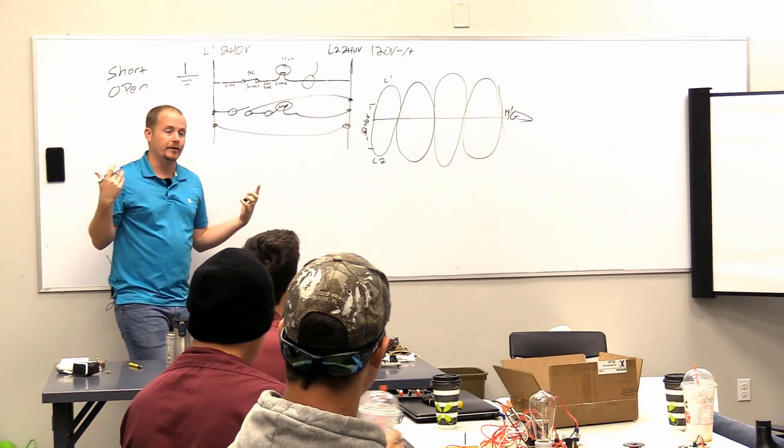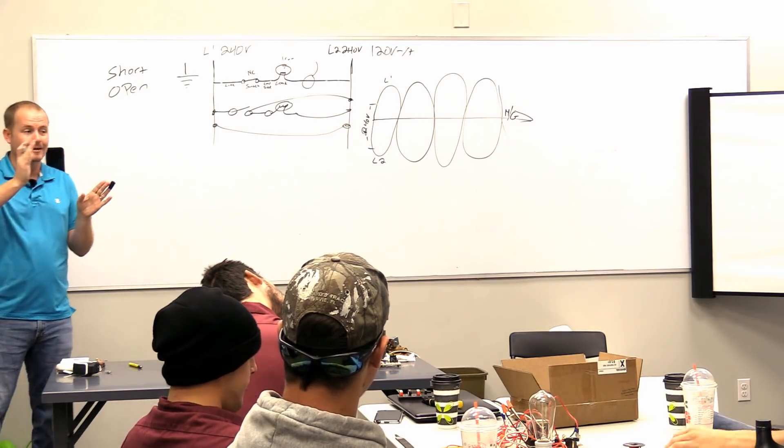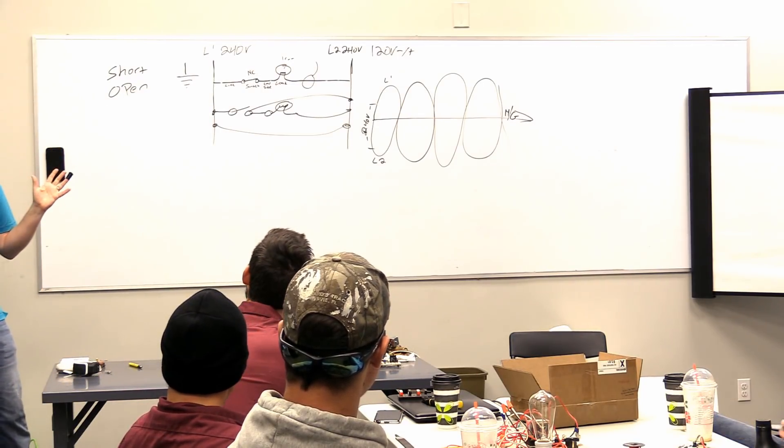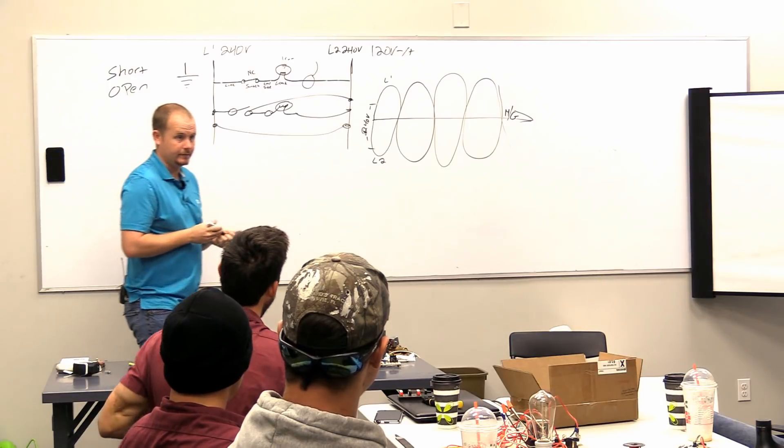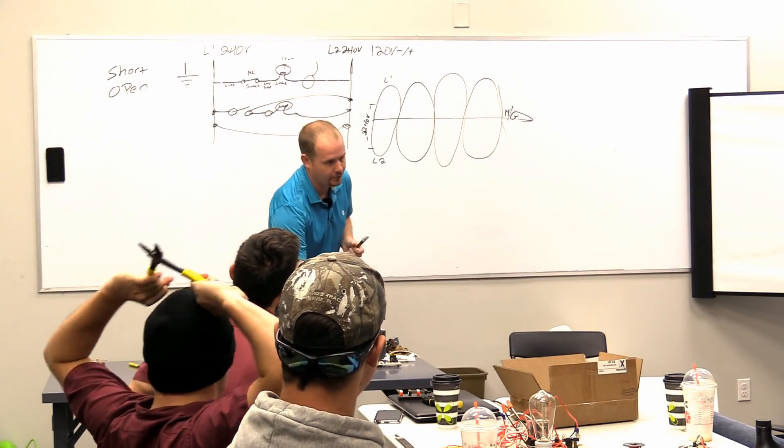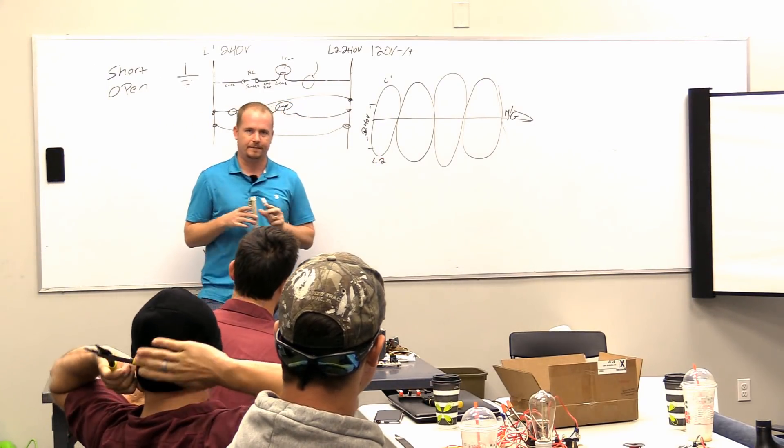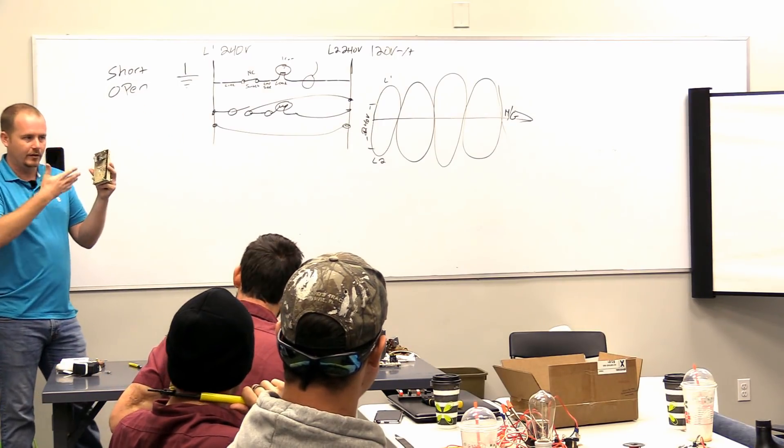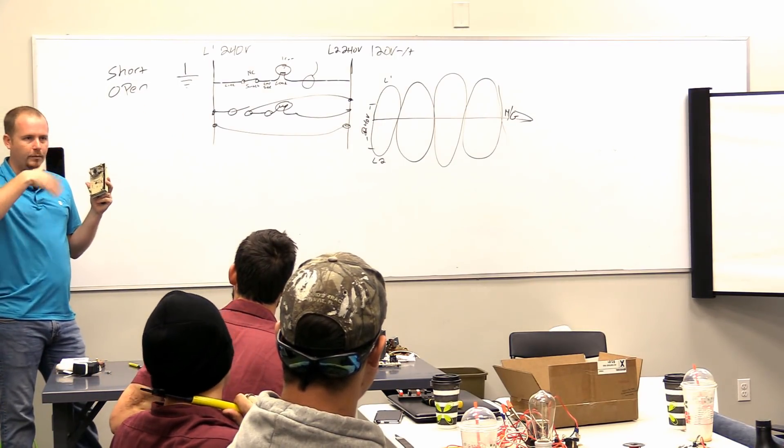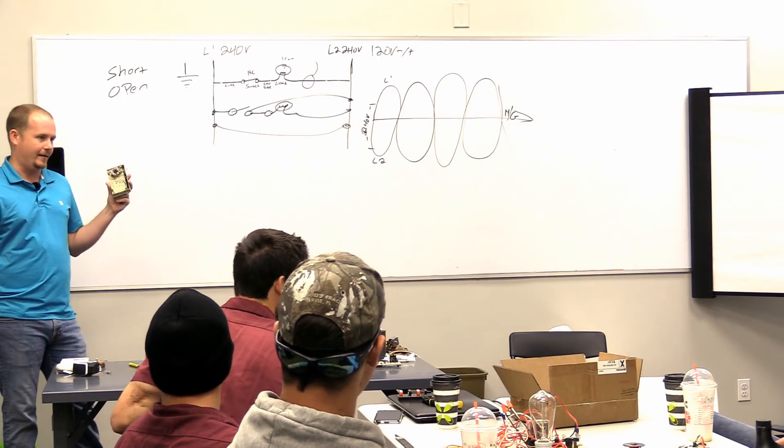But we also know that there's shorts that we see on the load side of switches. The thermostat's a switch, right? You guys all know that. It's primarily a switch. It has a load in it too, as well for the microprocessor. And that's why you have power in common is because it's doing some work in there. But primarily it's a switch. It's there to open and close switches, make and break paths, right?